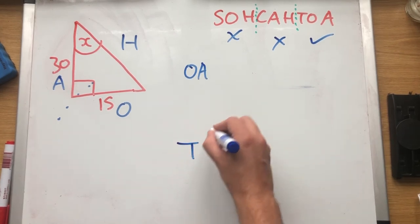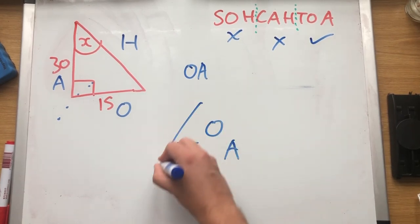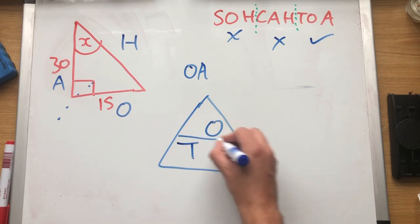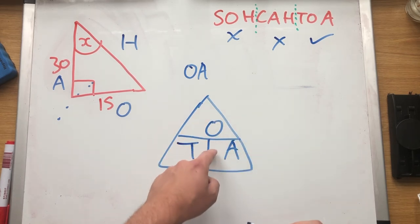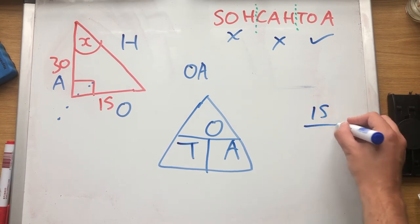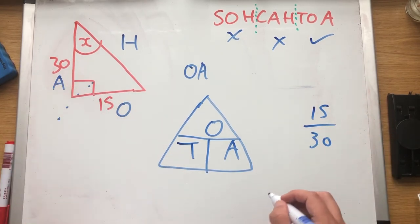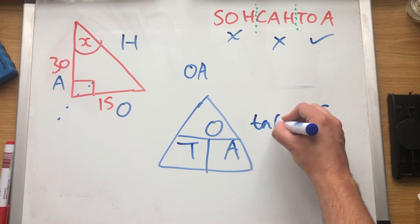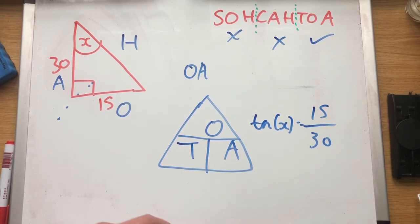So now we're going to do our triangle. T, O, A. So we are looking. We've got O, we've got A. So it's going to be 15 over 30. And that equals tan angle, which is tan x. So tan x equals 15 over 30.